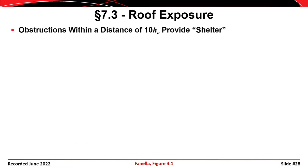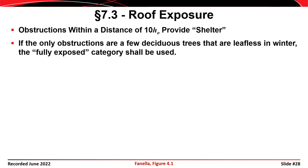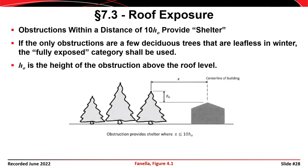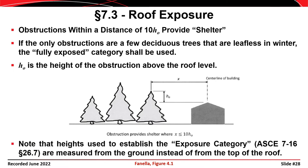Obstructions must be within a distance of 10 times H-naught to provide shelter. If the only obstructions are deciduous trees that lose their leaves in winter, the structure is classified as fully exposed. H-naught is the height of the obstruction above roof level — a horizontal dimension X and a vertical dimension H-naught measured from the peak of the roof, as shown in the Finale textbook figure. Note that heights used to establish exposure category for wind loads (per Chapter 26) are measured from ground level, not from the roof.